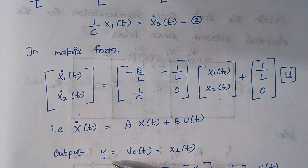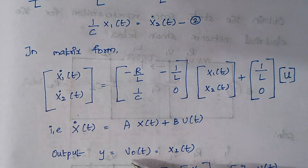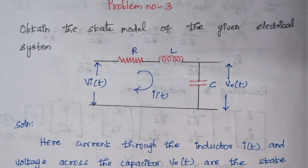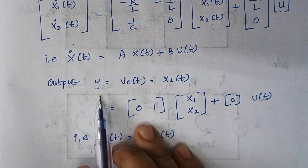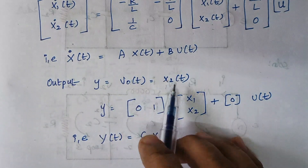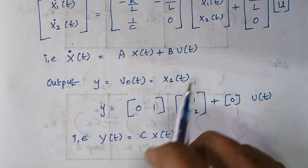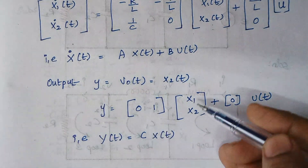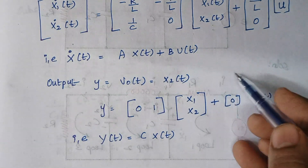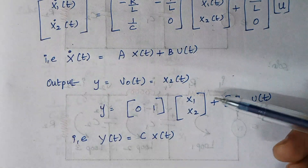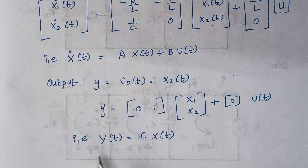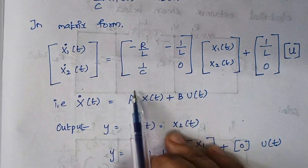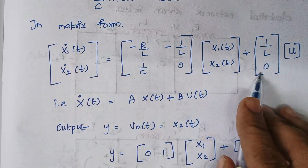Now we calculate the output. The output from this diagram is the voltage across the capacitor, so y = V0(t) = x2(t). In matrix form, there is no x1(t) term so its coefficient is 0, and the coefficient of x2(t) is 1. The u(t) term is 0. This follows the general format y(t) = C·x(t), where this matrix denotes C, and the earlier matrices denote A and B.